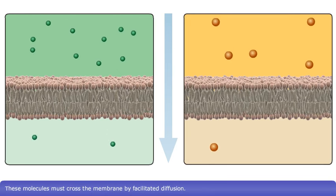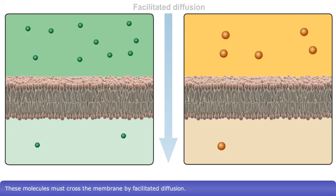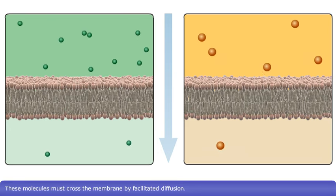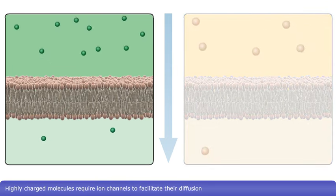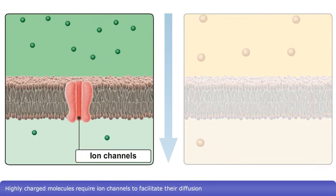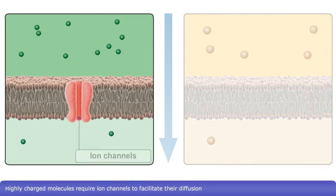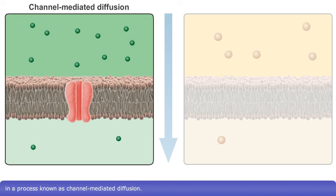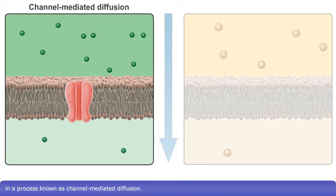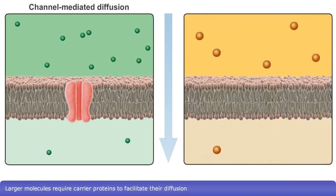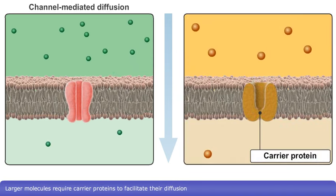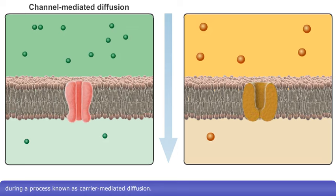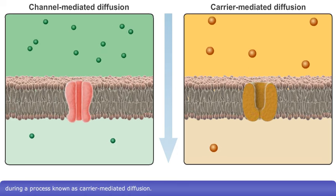These molecules must cross the membrane by facilitated diffusion. Highly charged molecules require ion channels to facilitate their diffusion in a process known as channel-mediated diffusion. Larger molecules require carrier proteins to facilitate their diffusion during a process known as carrier-mediated diffusion.